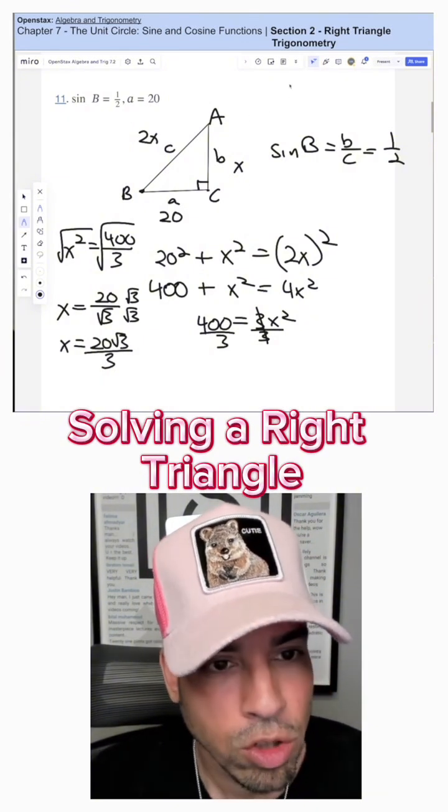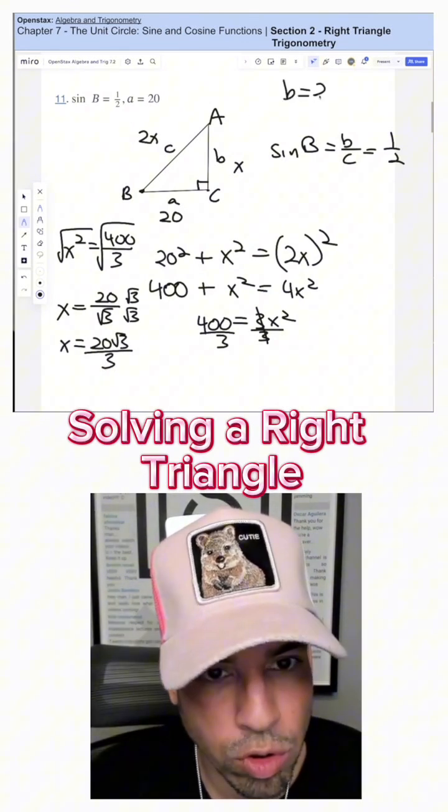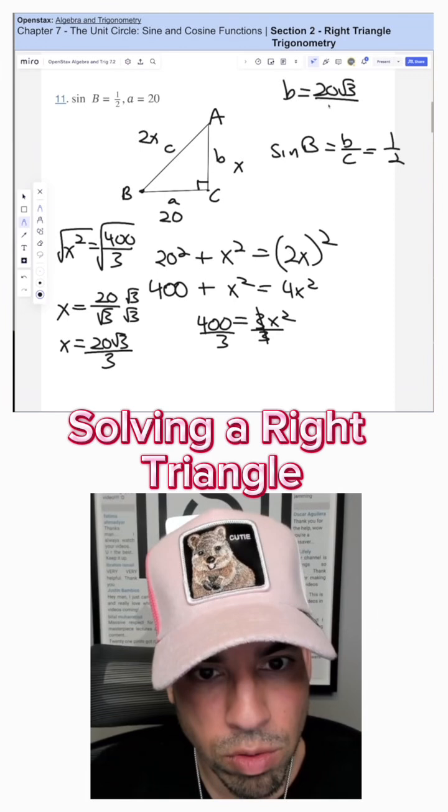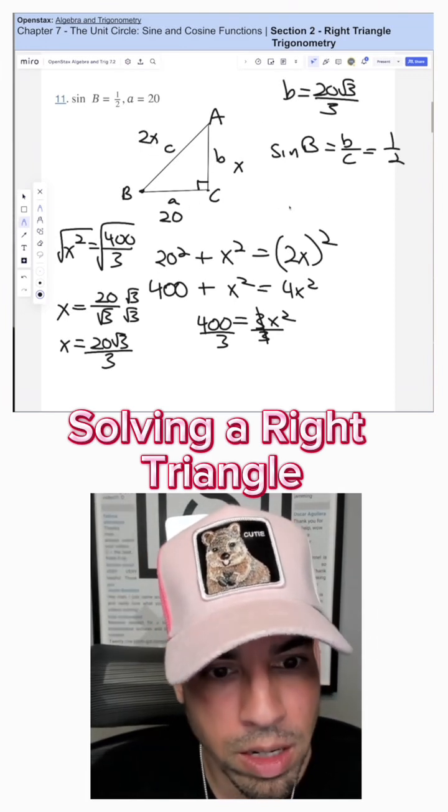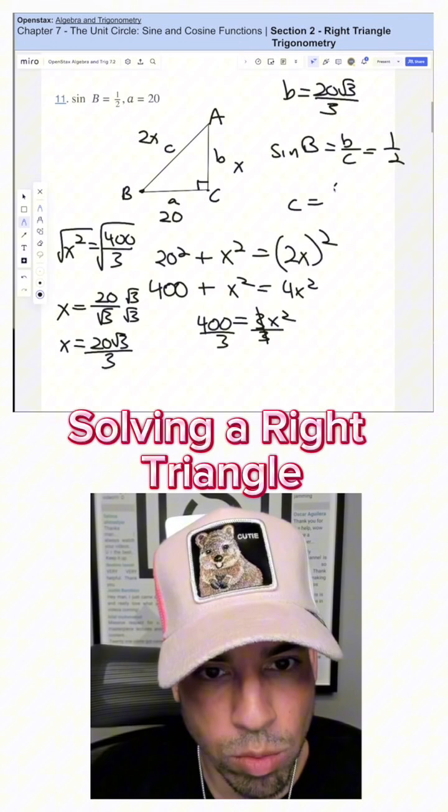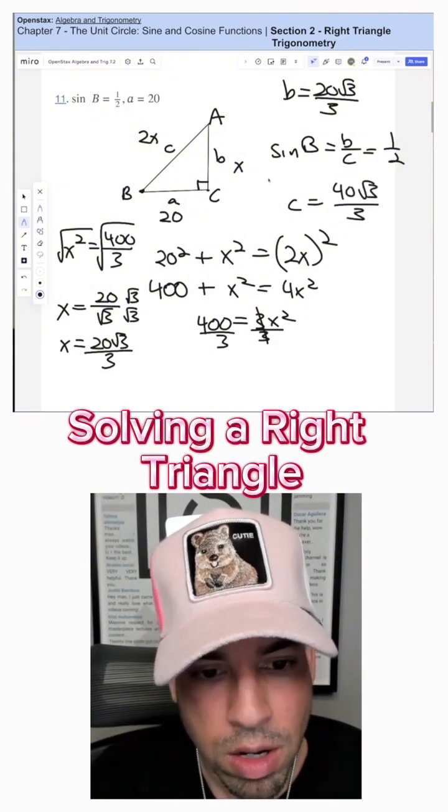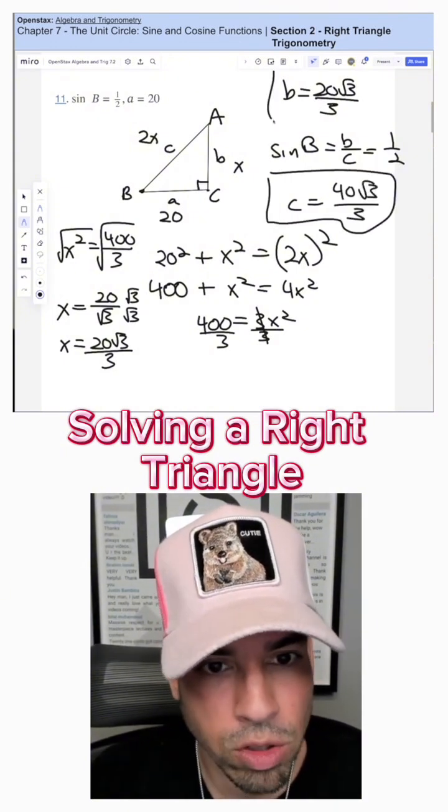And again, X is B. So that really means B equals 20 rad 3 over 3. And now when we get to C, C is just double this, right? So C is 2 times that, which is 40 rad 3 over 3. So there are your two answers.